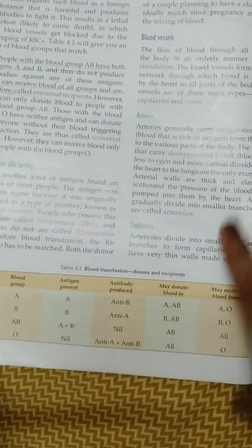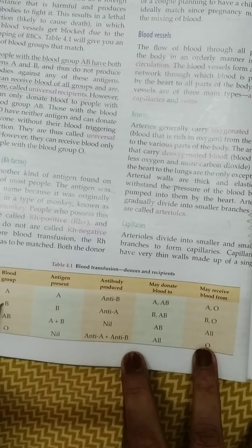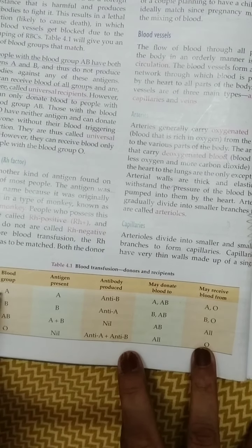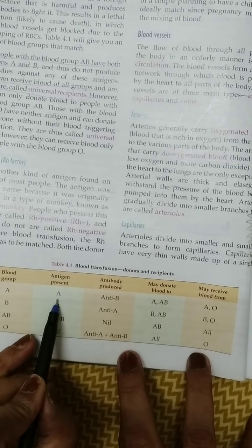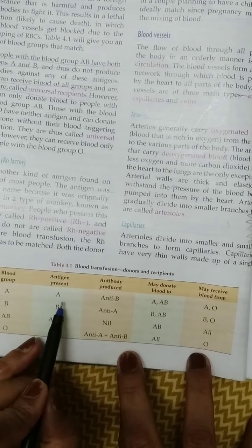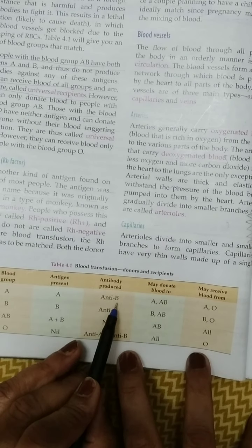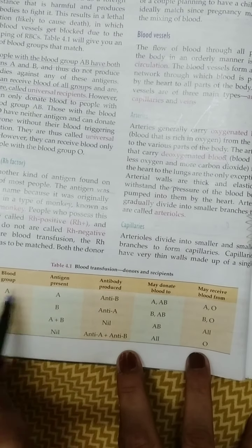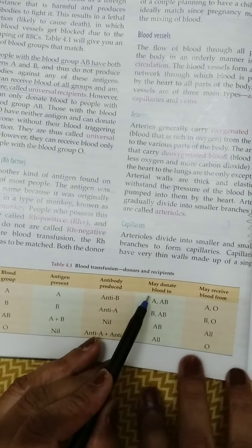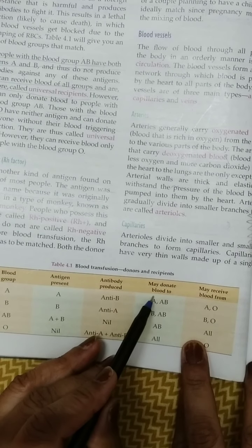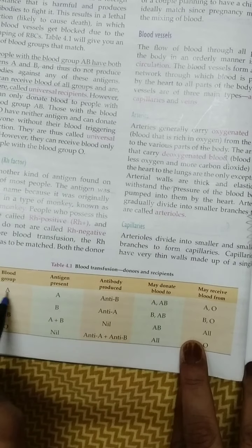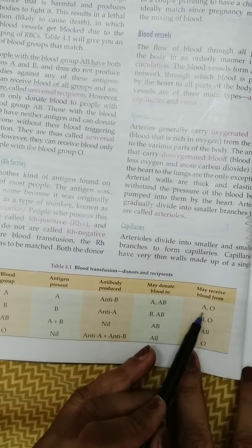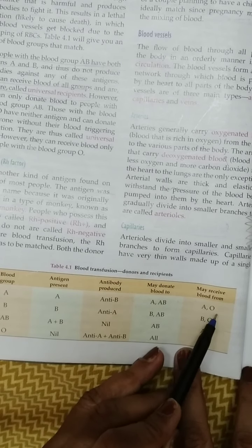There is a table in your book showing all four blood groups. In blood group A, Antigen A is present and antibody B is present. This blood group may donate blood to a person having blood group A or AB, and it can receive blood from blood group A or O.